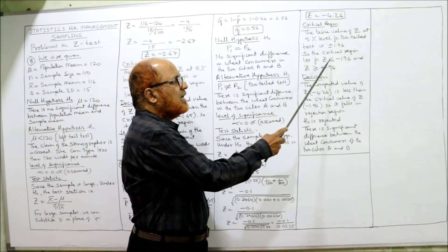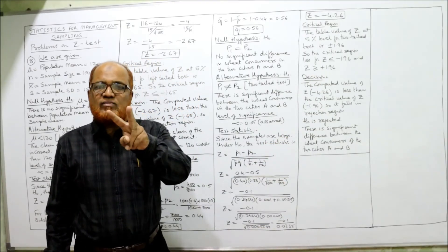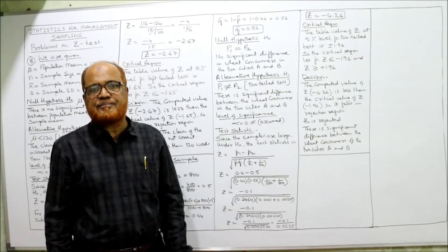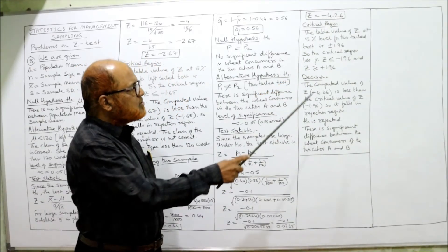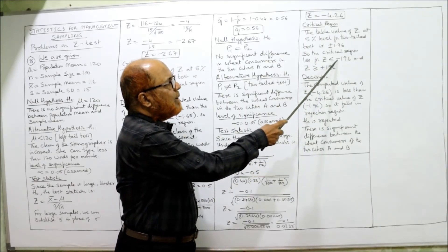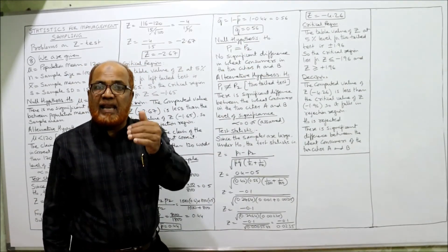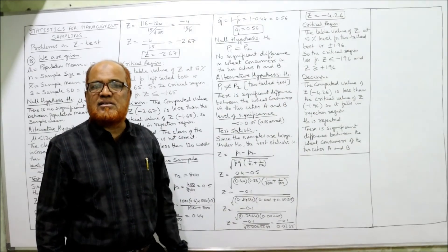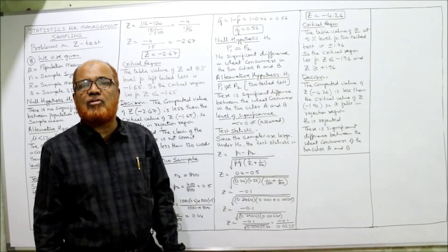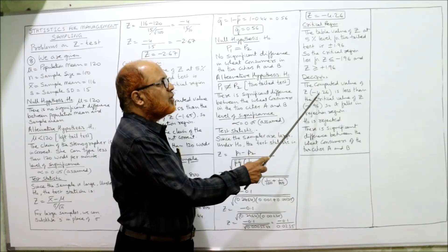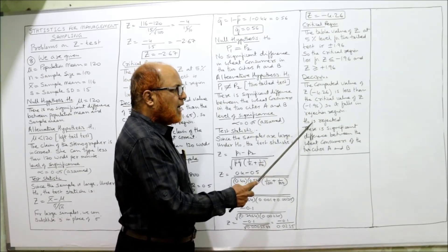The critical region lies for Z less than or equal to minus 1.96 and Z greater than or equal to plus 1.96 — two tail test, so the rejection region lies on both the left and right sides. Our computed value is minus 0.426. We compare this with minus 1.96. Now minus 0.426 is not less than minus 1.96 — it does not fall in the rejection region. So the null hypothesis is not rejected.